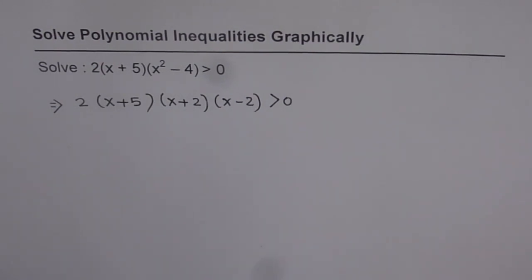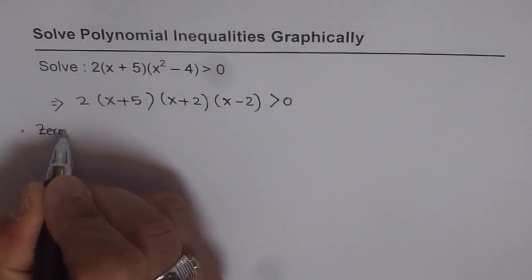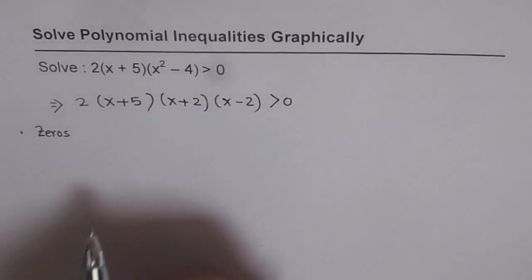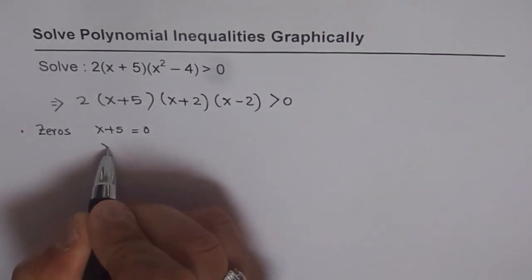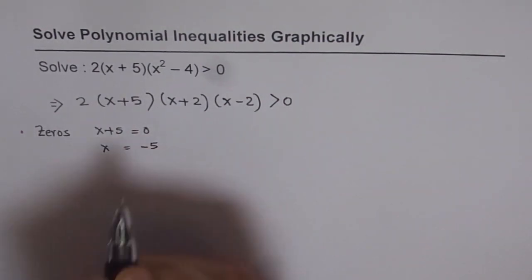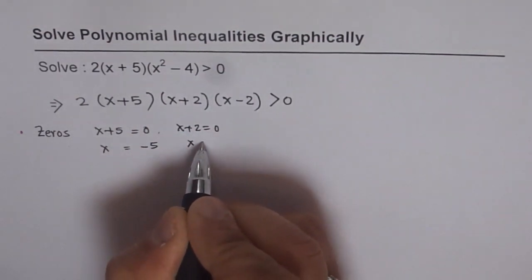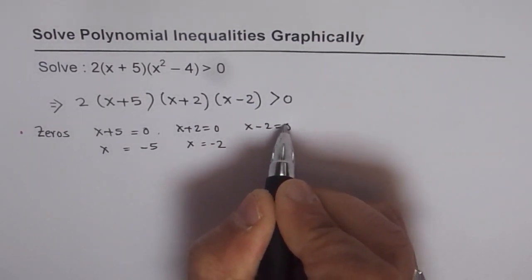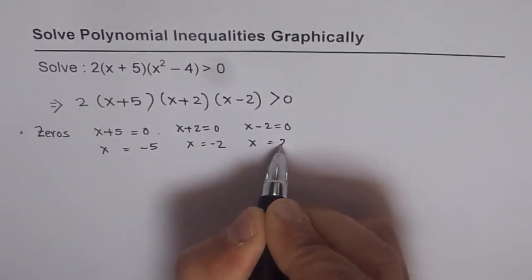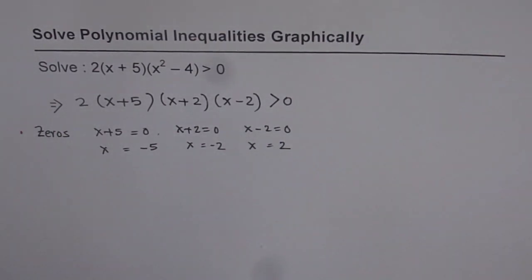And now, the first step here is to find all the zeros. So how do you get the zeros? To find zeros, what you do is you equate each factor to 0. So first factor is x plus 5, we equate it to 0 and we get x equals to minus 5. The second factor gives x equals to minus 2. The third one gives you a zero at x equals to plus 2.